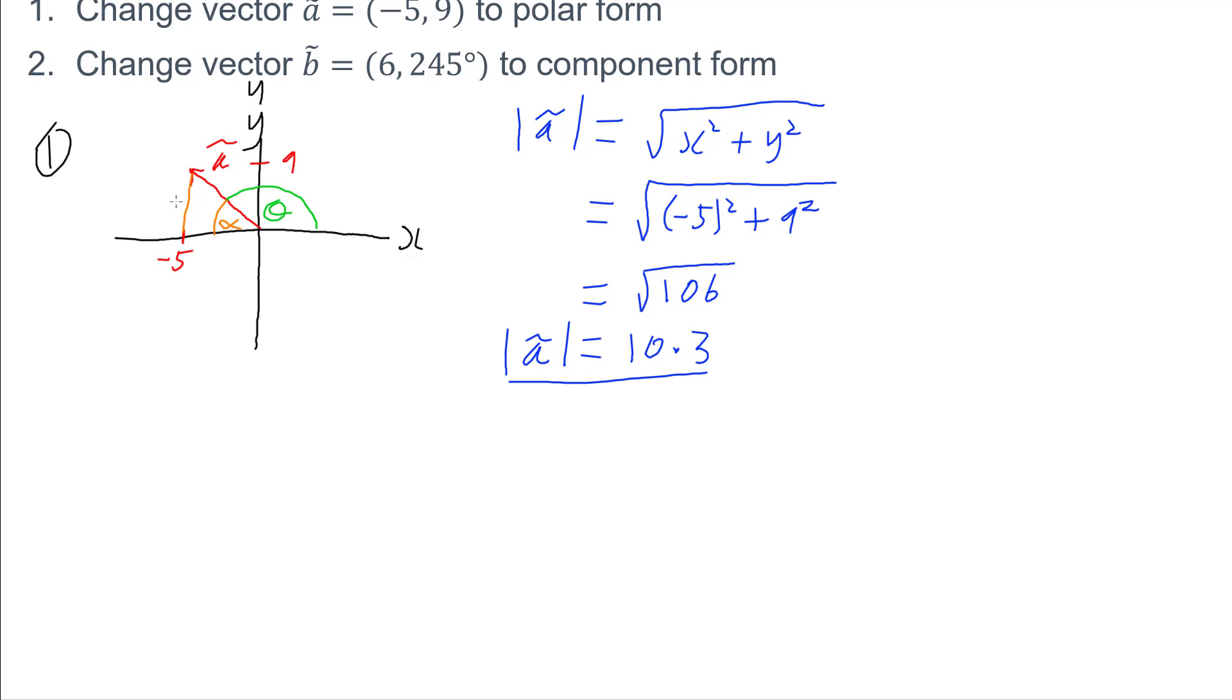And this is useful because I now have my opposite, which is my 9, and my adjacent, which is 5, and I can use tan.